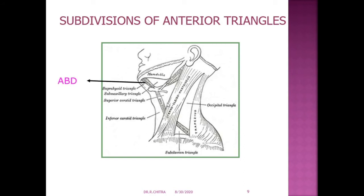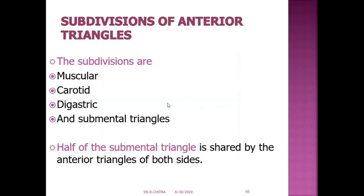The three bellies are: the anterior belly of digastric, the superior belly of omohyoid, and the posterior belly of digastric. So the anterior triangle is subdivided into: muscular triangle, carotid triangle, digastric triangle, and half submental triangle. Half of the submental triangle is shared by the anterior triangles of both sides.